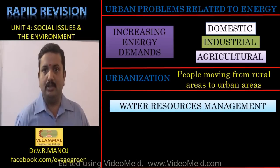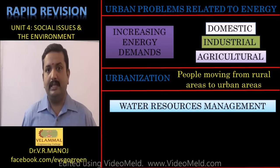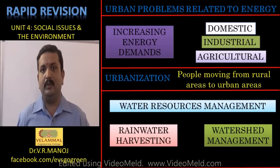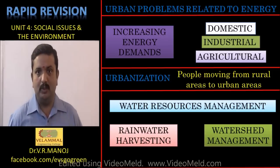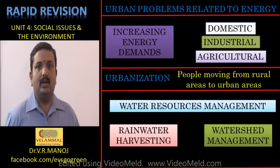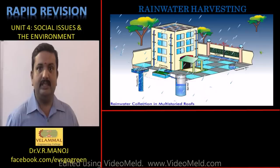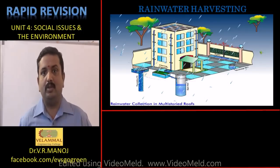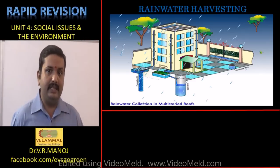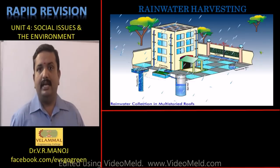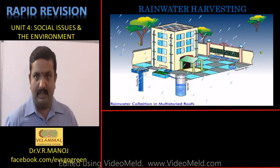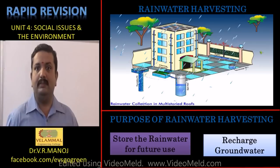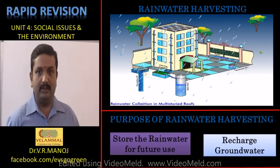Water resources conservation includes two major methods: rainwater harvesting and watershed management. Under rainwater harvesting, the essential principle is to collect rainwater through channels or specific construction structures in buildings and houses, and direct them either to the groundwater or to a central storage from where it is filtered and provided as drinking water or for other purposes. The two major objectives are to store the rainwater and to recharge the groundwater.